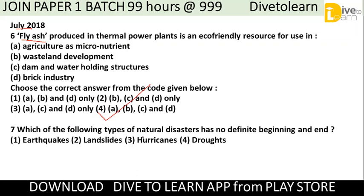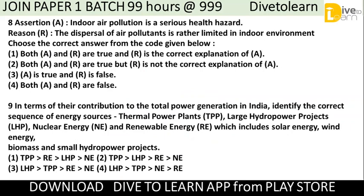Which of the following types of natural disasters has no definite beginning and end? Options are earthquakes, landslides, hurricanes, or droughts. The answer is droughts, because we cannot clearly see how a drought will start and how it will end — there is no definite definition for when it begins or concludes.